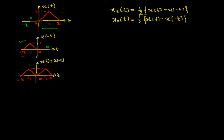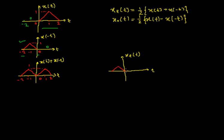The next task is to divide by 2, which is a simple task. It does not alter the shape of the signal — it remains the same — but the amplitude reduces to half. The even part Xe(t) is drawn with time divisions at minus 2, minus 1, 0, 1, and 2, with amplitude halved.